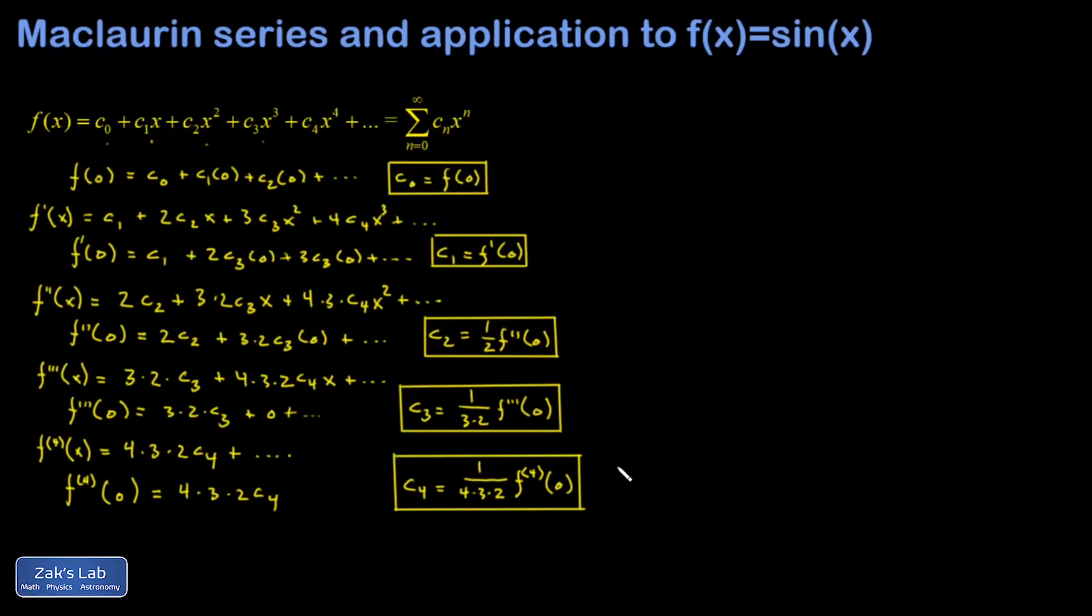So now I realize I'm looking at factorials in these denominators. So this is going to help me to express things in general to find the nth coefficient. c4 is 1 over 4 factorial. Fourth derivative of f evaluated at 0.